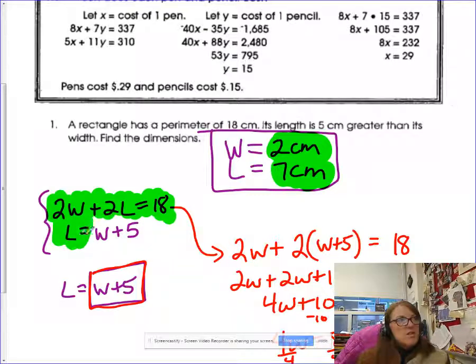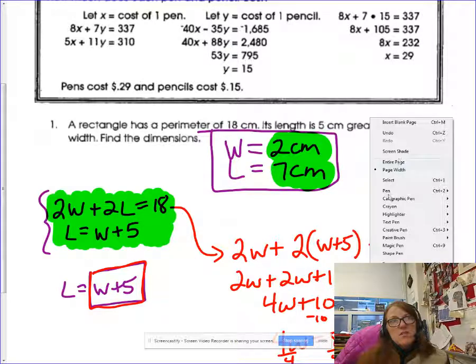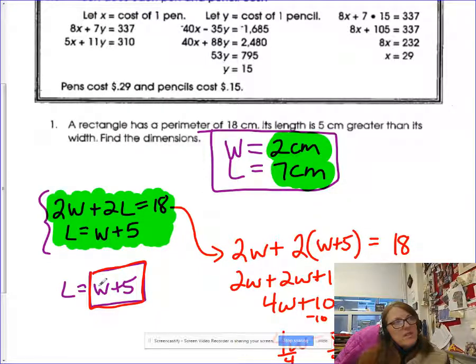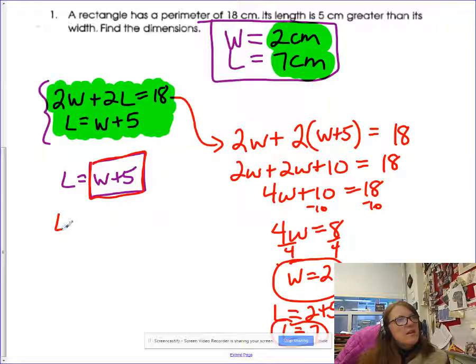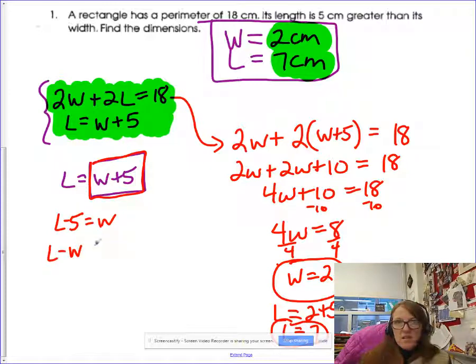Perimeter is 18, so you have two widths and two lengths is 18. Now, this second equation where it says the length is five more than the width, there's really a variety of equations you could have used for that second situation. This is just one of them. Length is w plus five. You could have also thought of it this way. You said if I took five away from the length, then I'd get down to the same number the width is. You could have done that. Or you could have said, if I take the length and the width and subtract them, I get five.